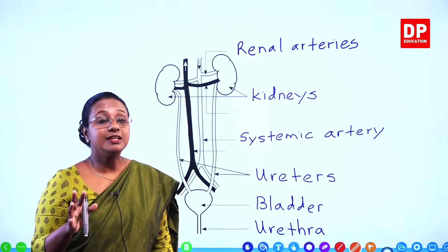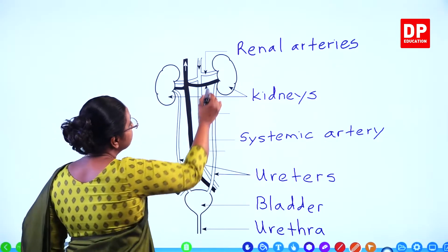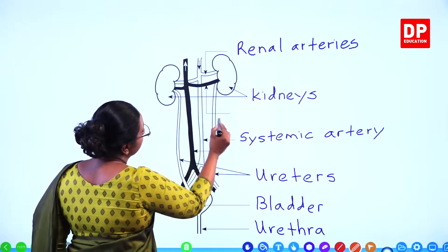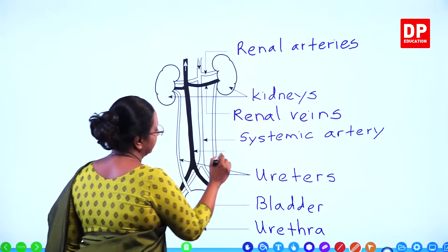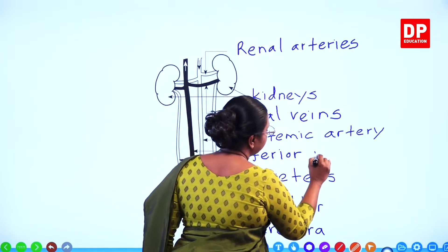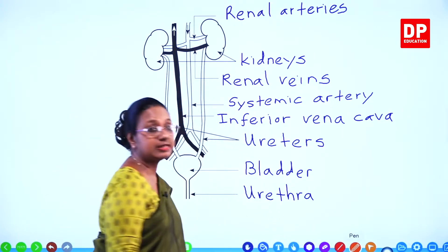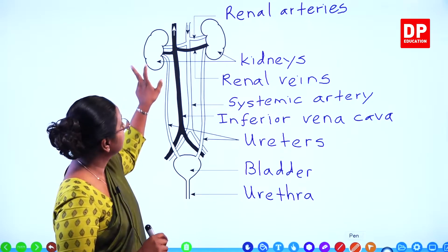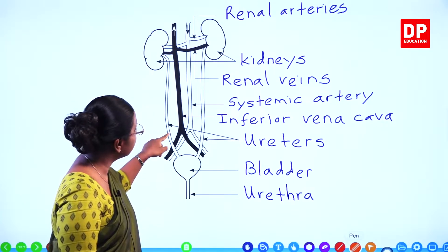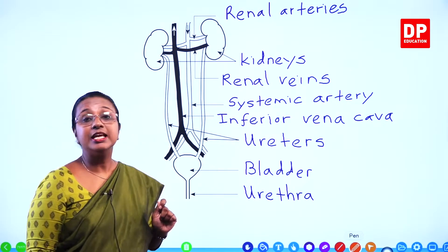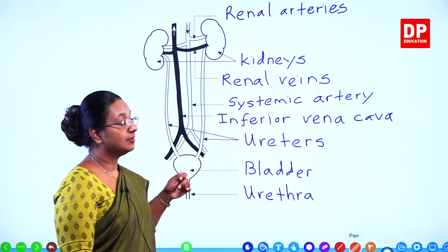Inside the kidney, all excretory materials from blood are taken in, urine is produced, and blood without excretory materials comes out through the renal veins, which open into the inferior vena cava. The parts of the excretory system to identify are: kidneys, ureters, bladder, urethra, the renal arteries from the systemic artery, and the renal veins opening into the inferior vena cava.